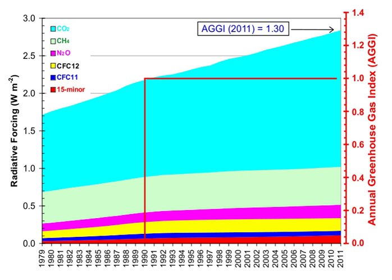Future warming is projected to have a range of impacts, including sea level rise, increased frequencies and severities of some extreme weather events, loss of biodiversity, and regional changes in agricultural productivity. The main sources of greenhouse gases due to human activity include: burning of fossil fuels and deforestation leading to higher carbon dioxide concentrations; livestock enteric fermentation and manure management; paddy rice farming; land use and wetland changes; man-made lakes; pipeline losses; and covered vented landfill emissions leading to higher methane concentrations.